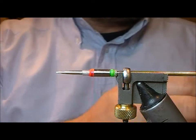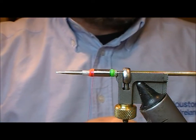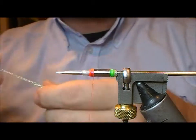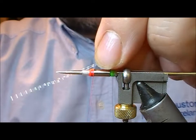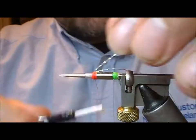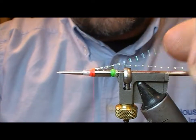Very simple fly. It's just a tube and a wing. I'm going to take a bit of pearl crystal hair here. Tie two strands of it in and fold it back.